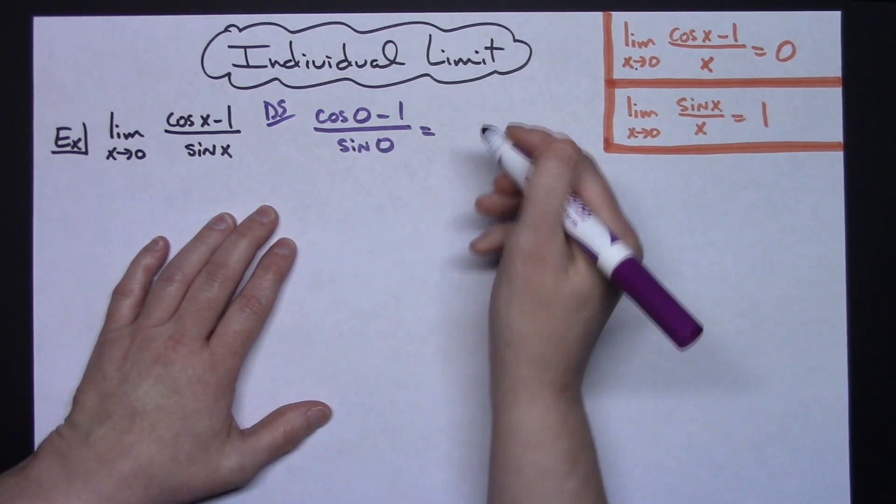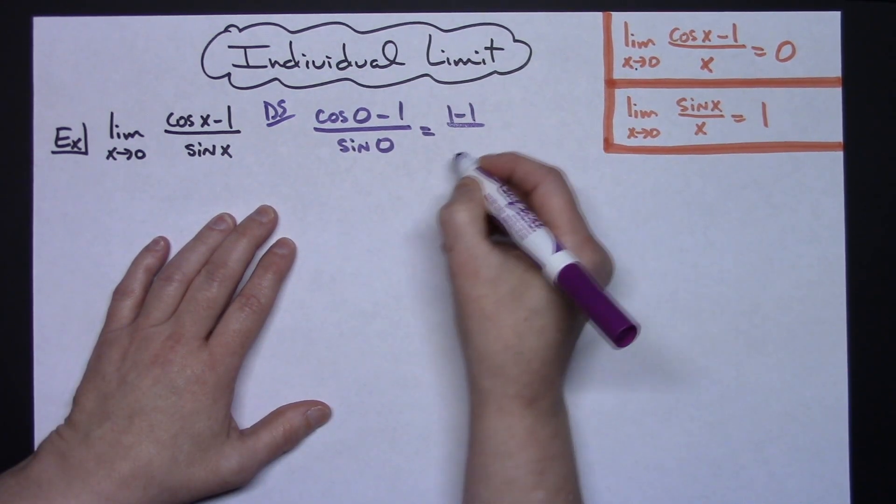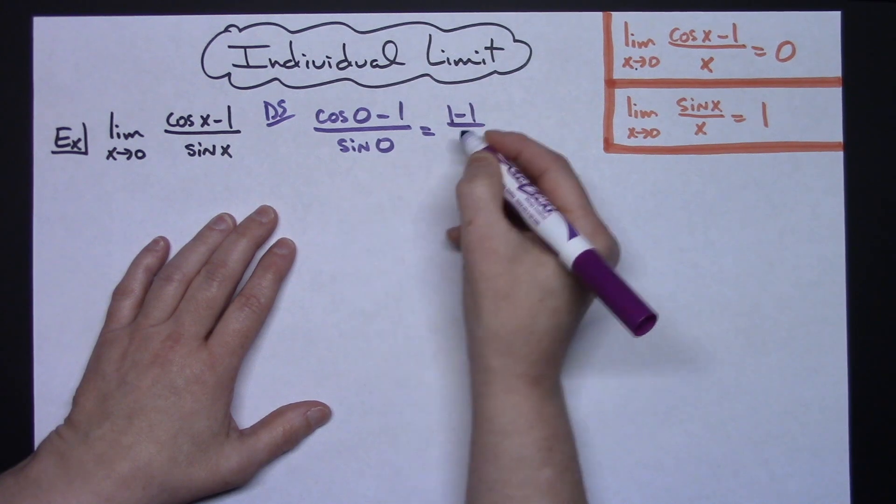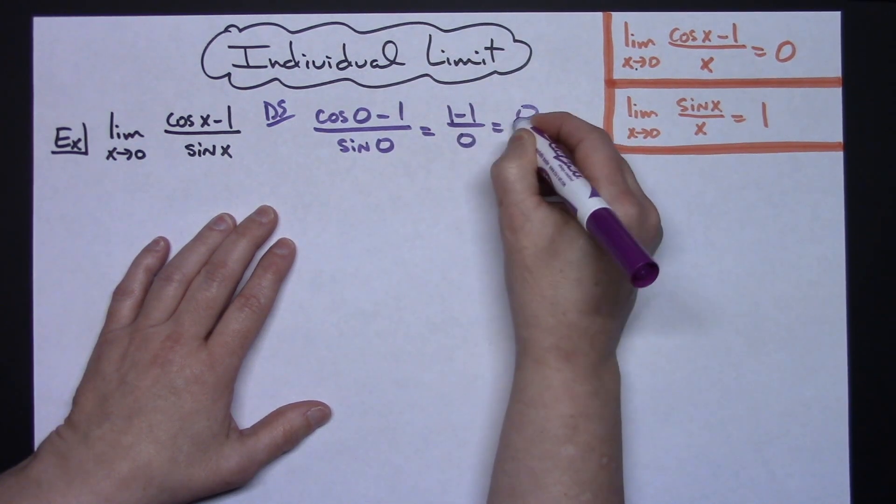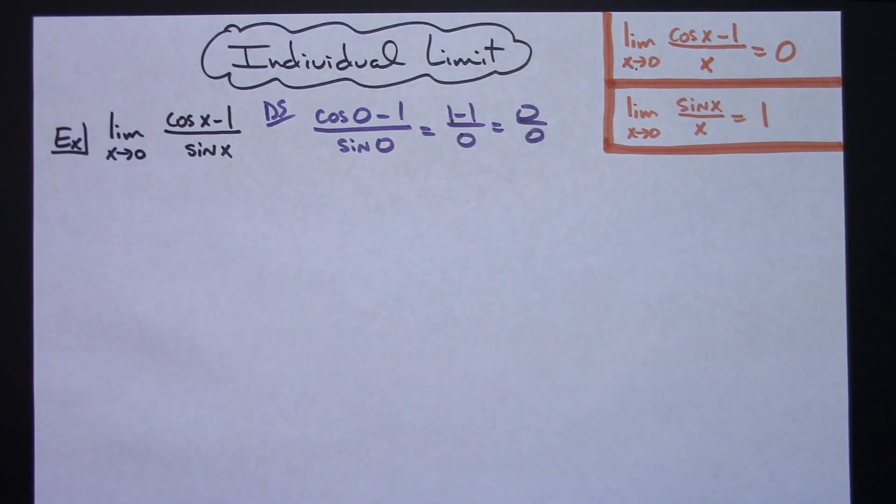Cosine of 0 is 1, so on top I'll have 1 minus 1, and the sine of 0 is 0. So I will have 0 over 0, which is that indeterminate form, which means I just have to do some algebra manipulation to be able to come up with this limit.